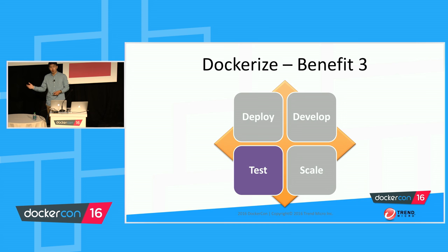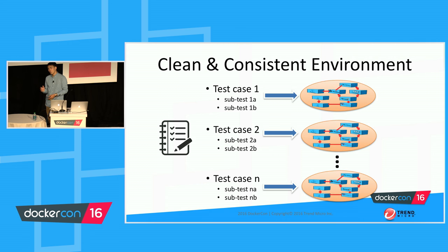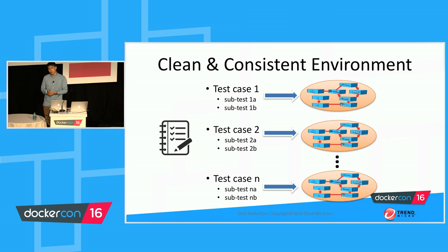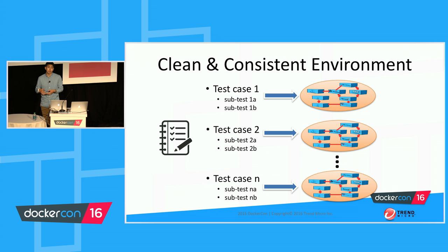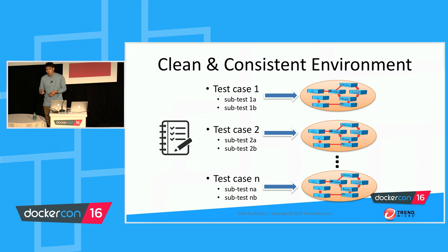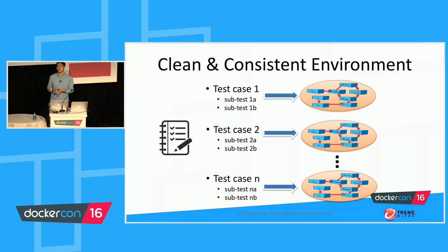Next, let's move on to testing. For QA, there are two important requirements: a clean environment for testing, and consistency with the production environment. By using Docker, we can meet both requirements easily. Since we Dockerized our system, QA can launch a brand-new testing environment for each integration test quickly, with no worry about environmental factors impacting test results. And since all dependencies are wrapped into Docker images, we can ensure each integration test environment matches the production environment.